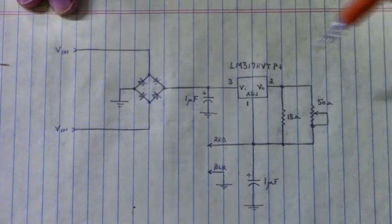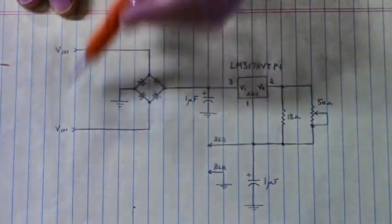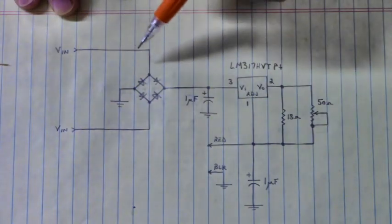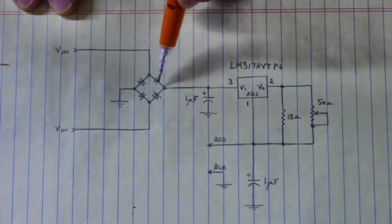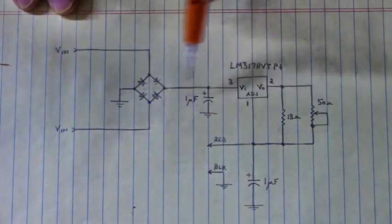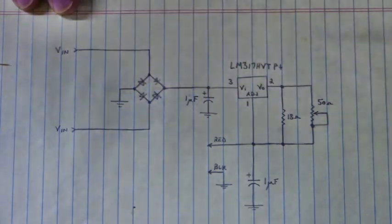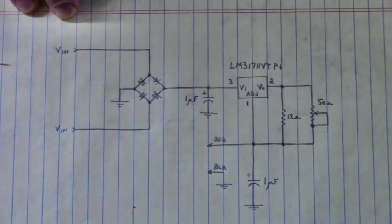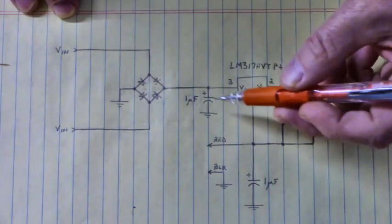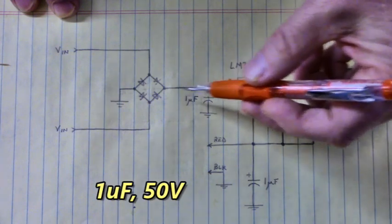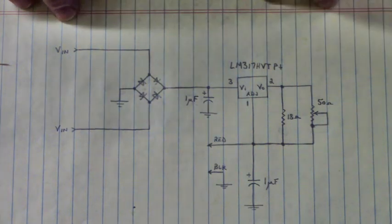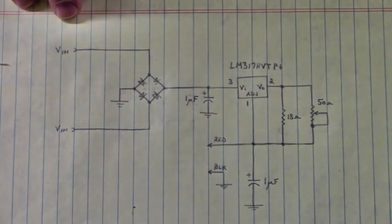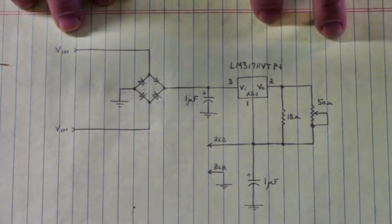Over here is where we bring our DC voltage in. The polarity doesn't matter because this bridge rectifier corrects the incoming polarity to the proper polarity for VIN and ground. Here's some filter capacitance right here and right here. I'll put this up at the end of the video so you can take screenshots and build your own circuit.